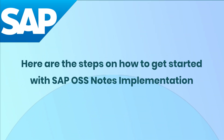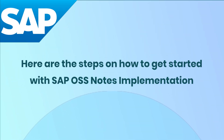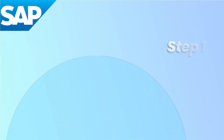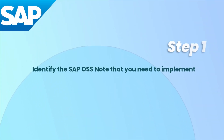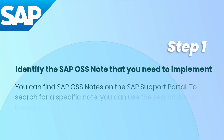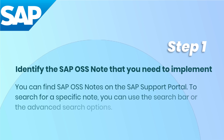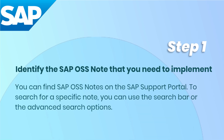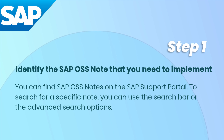Here are the steps on how to get started with SAP OSS Note implementation. Step 1: Identify the SAP OSS Note that you need to implement. You can find SAP OSS Notes on the SAP Support Portal. To search for a specific note, you can use the search bar or the advanced search options.